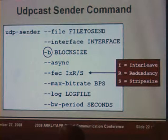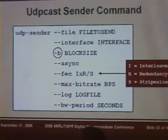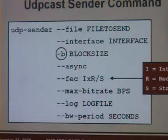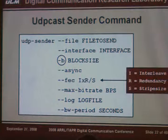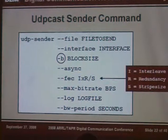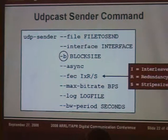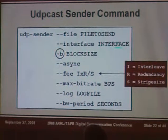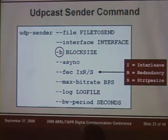UDPcast has two commands — they're command-line oriented. One is called UDP sender. This is the basic structure of the command; you can go to the website at udpcast.linux.lu. You specify dash-dash-file and the local file you're going to transmit across the network to the client. The interface — by default it's eth0, but for me I'm using AX0 because I'm using packet radio. Then dash-B is the block size — I've set my block size to 256, which reflects the block size set on my TNC.